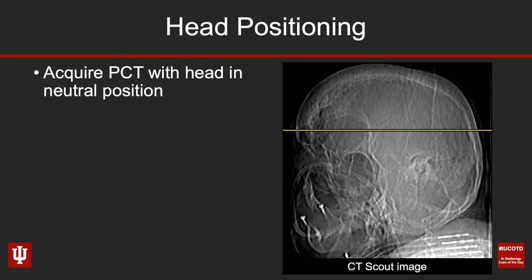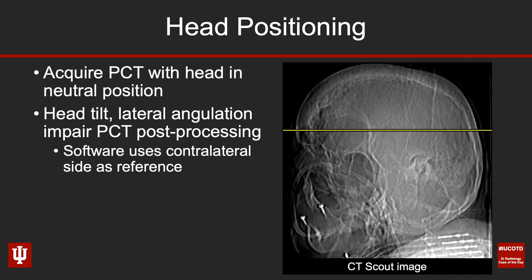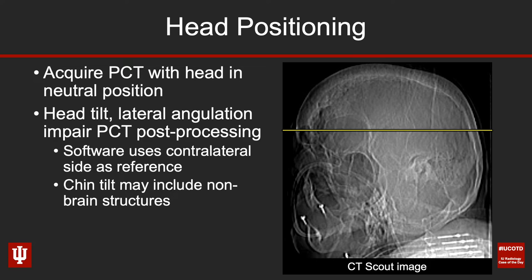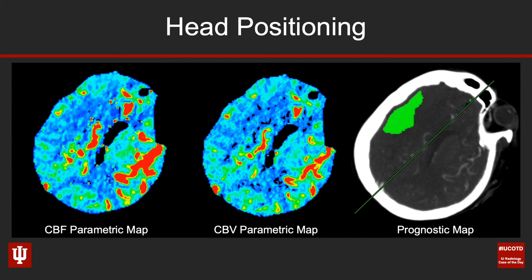It's also important to keep in mind that perfusion CT imaging needs to be done with the patient's head in neutral position. If the patient tilts their head or has any lateral angulation, that's going to impair acquisition and post-processing, because the software uses the contralateral side as a reference. Tilting the chin — either extension or flexion — may include non-brain structures into the image field of view, which may get interpreted as part of the brain when in reality you're imaging the skull base or orbits.